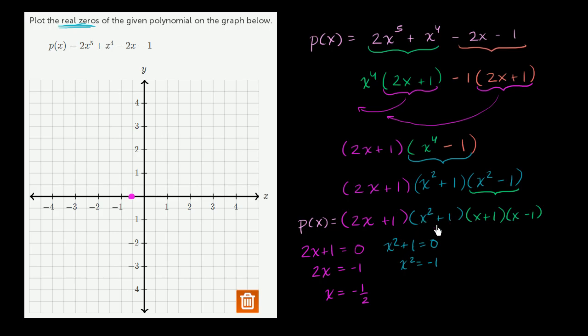Now let's think about when x plus 1 could be equal to 0. Subtract 1 from both sides, you get x is equal to negative 1. So p of negative 1 is going to be 0. That's another one of our zeros. And then finally, when x minus 1 is equal to 0, add 1 to both sides, x is equal to 1. So we have another real zero right over there.